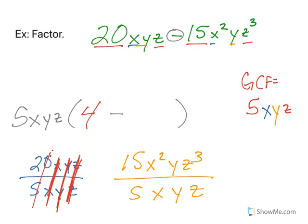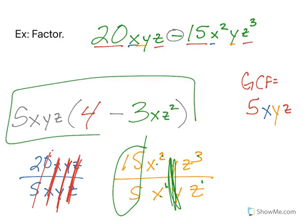So I check out my 15 divided by 5. I get 3. x squared over x. Divide. Same base. Subtract the exponents. 2 minus 1 is 1. My y's have the same exponent, so they cancel out. And then my z's. 3 minus 1 is 2. So my final answer is 5xyz times the quantity 4 minus 3xz squared. And that is factoring a GCF from an expression.